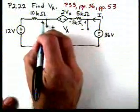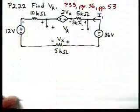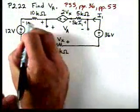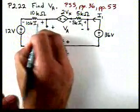For this resistor, by Ohm's law, the voltage polarity is given as such, and it's 10K times I1.